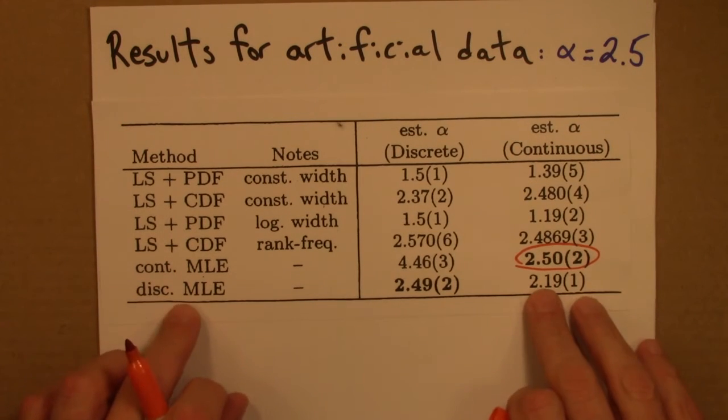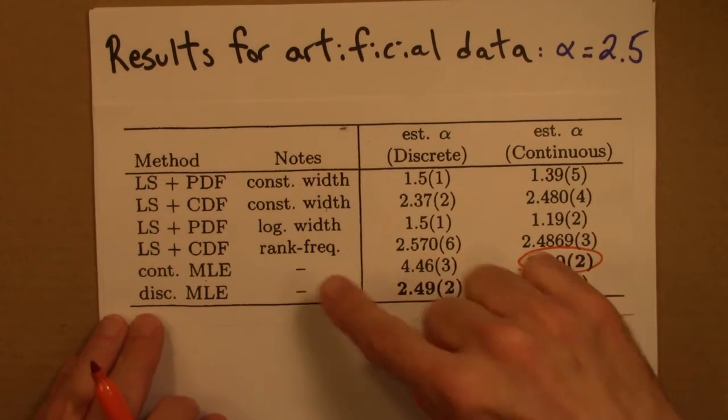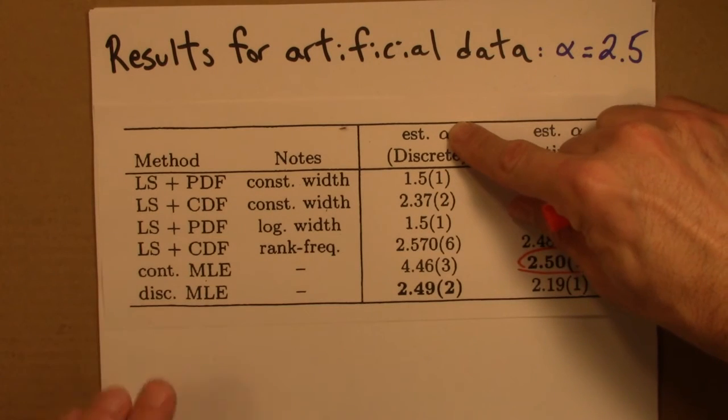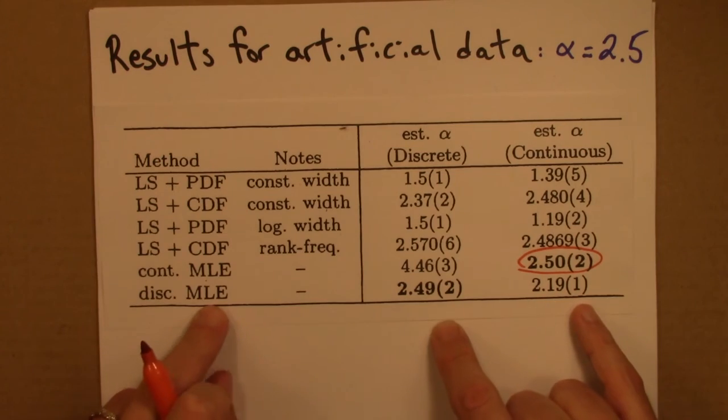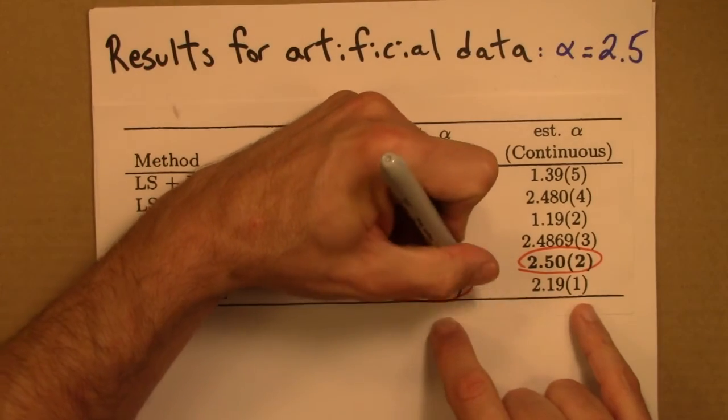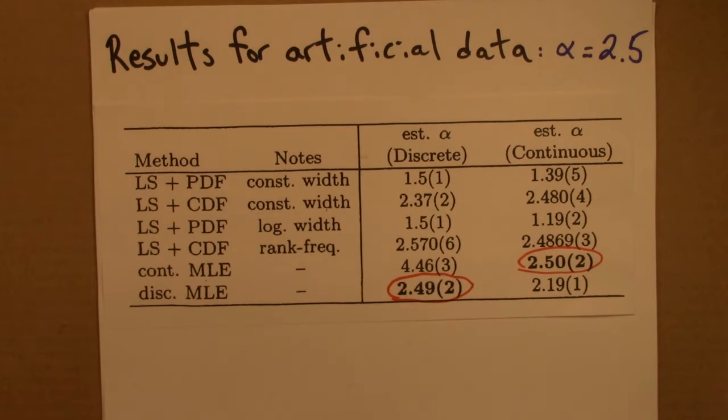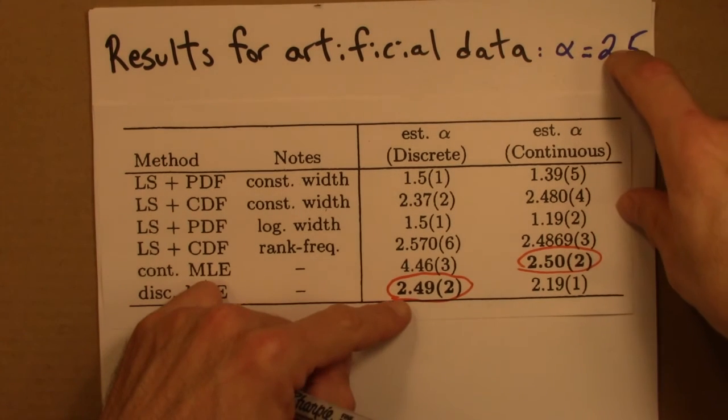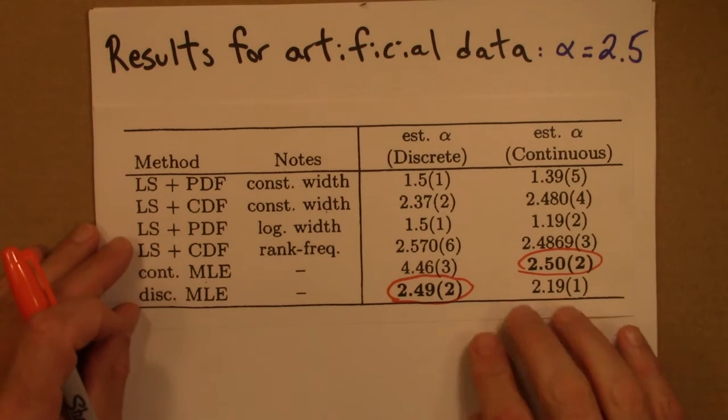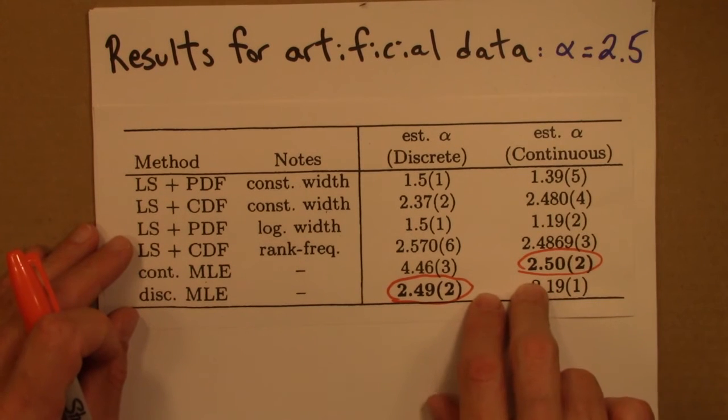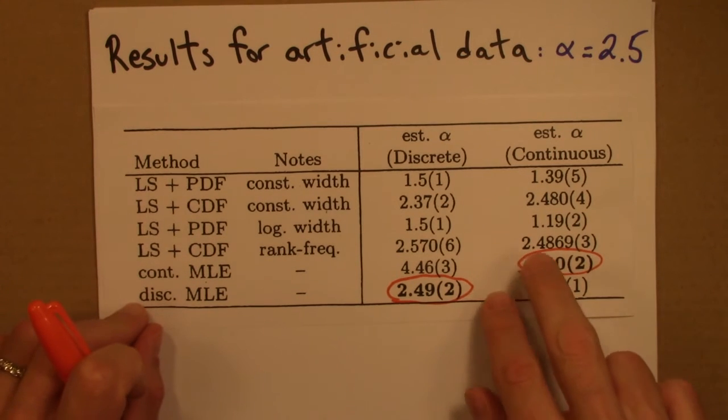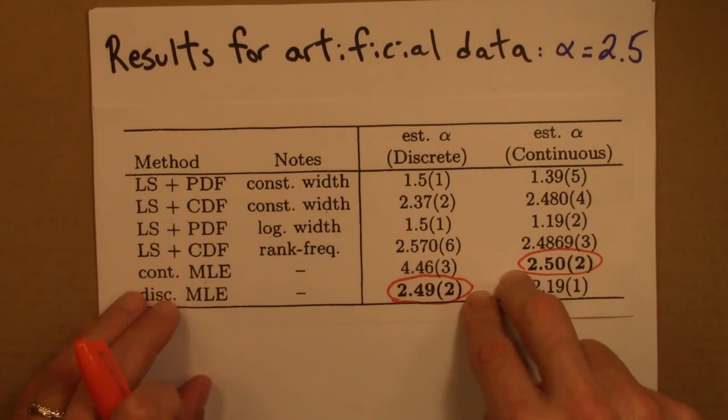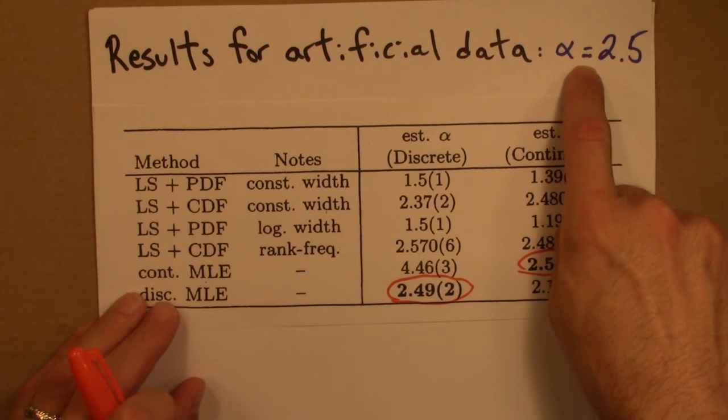The only other accurate result here is if you do, if you have a discrete power law and you use the discrete MLE formula, you get, or they get, 2.49 plus or minus .02. Again, consistent with the true value. So the maximum likelihood estimator for the appropriate type of distribution gives an accurate estimate of alpha with 10,000 data points.